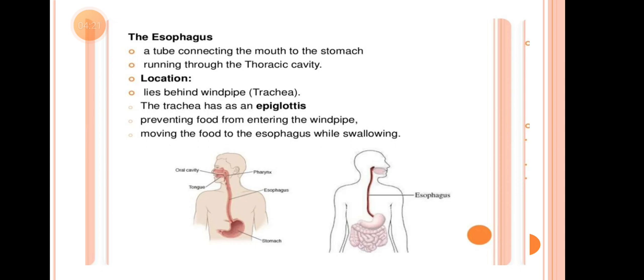The trachea has an epiglottis — a flap-like structure. When food passes through the esophagus, the epiglottis closes the trachea so that food, fluid, or water cannot enter the respiratory tract, thereby preventing food from entering the windpipe while swallowing.